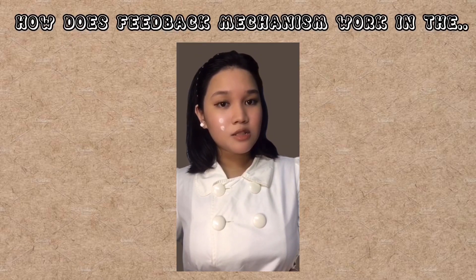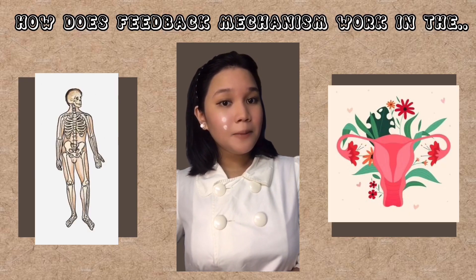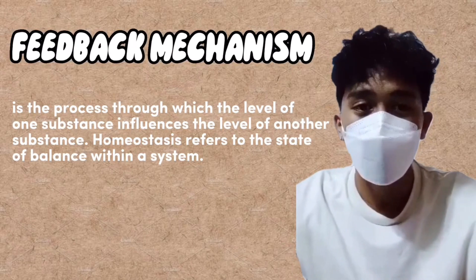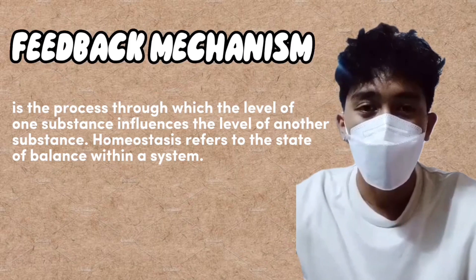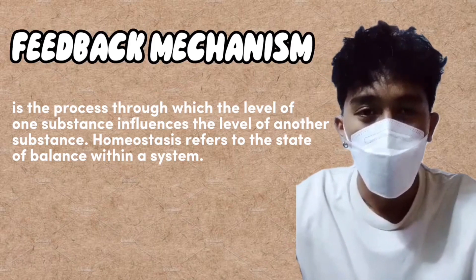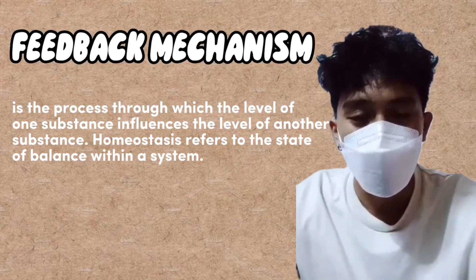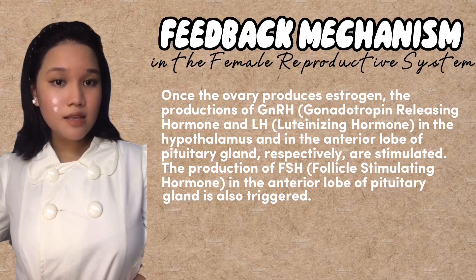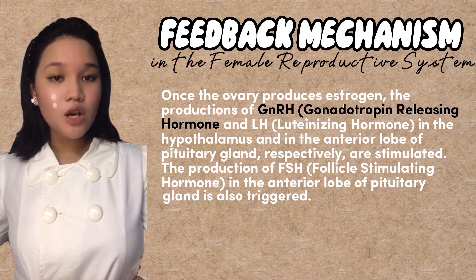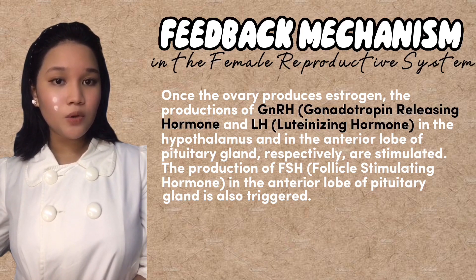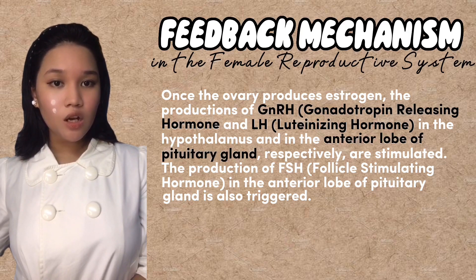Now, let's move on to our last objective, which is explaining how feedback mechanisms work in the body and in the female reproductive system. Feedback mechanism is the process through which the level of one substance influences the level of another substance. Homeostasis refers to a state of balance within a system. Once the ovary produces estrogen, the production of GnRH, or gonadotropin-releasing hormone, and LH, or luteinizing hormone, in the hypothalamus and in the anterior lobe of the pituitary gland, respectively, are stimulated.